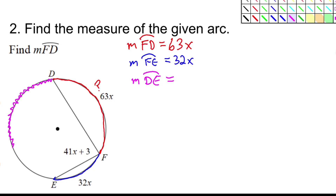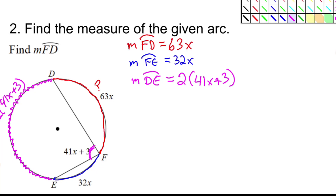Looking at this problem, I wonder if I can figure out what this arc is. This angle right here corresponds with that arc — it's the intercepted arc for the angle. So DE will be equal to two times (41X plus 3) — I'm just doubling that angle to get the arc. So this is 2 times (41X plus 3). Remember, the angle is always half of the arc; if I go the other way, I double it.